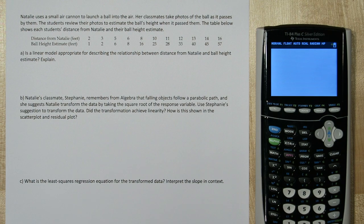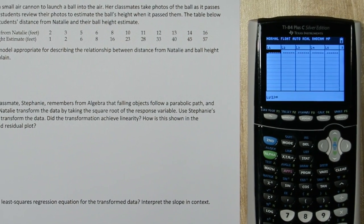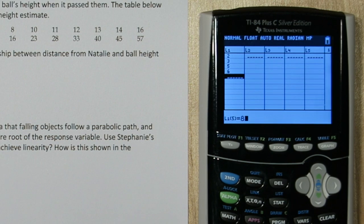Press the stat button and press enter. These are our lists and we're going to type the distance from Natalie in list 1 and the ball's height in list 2.